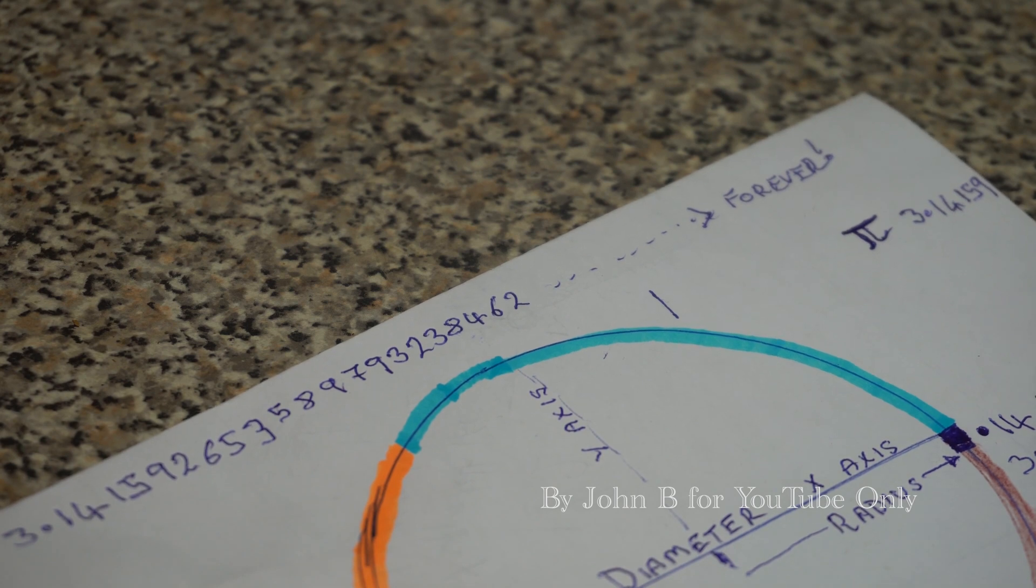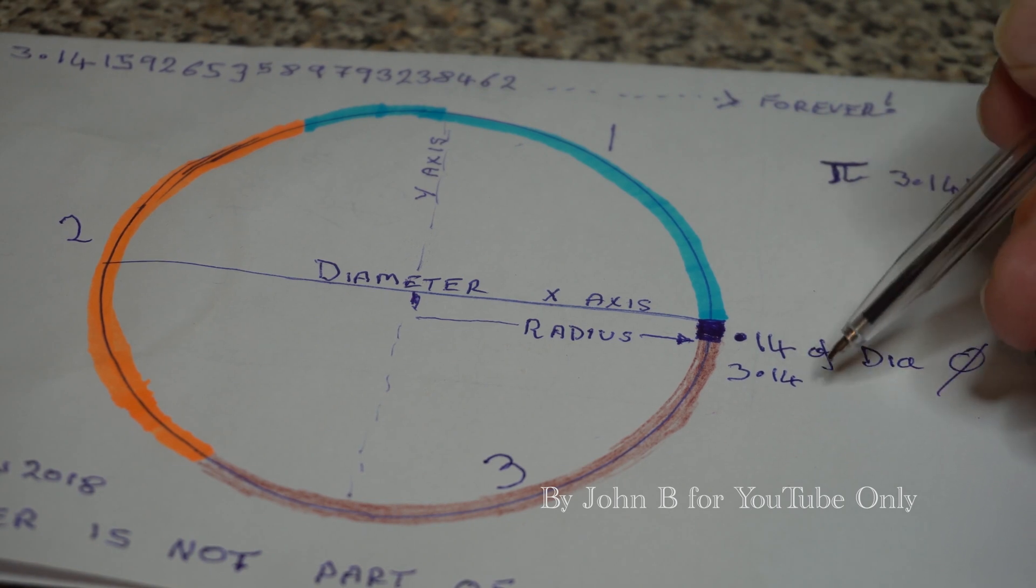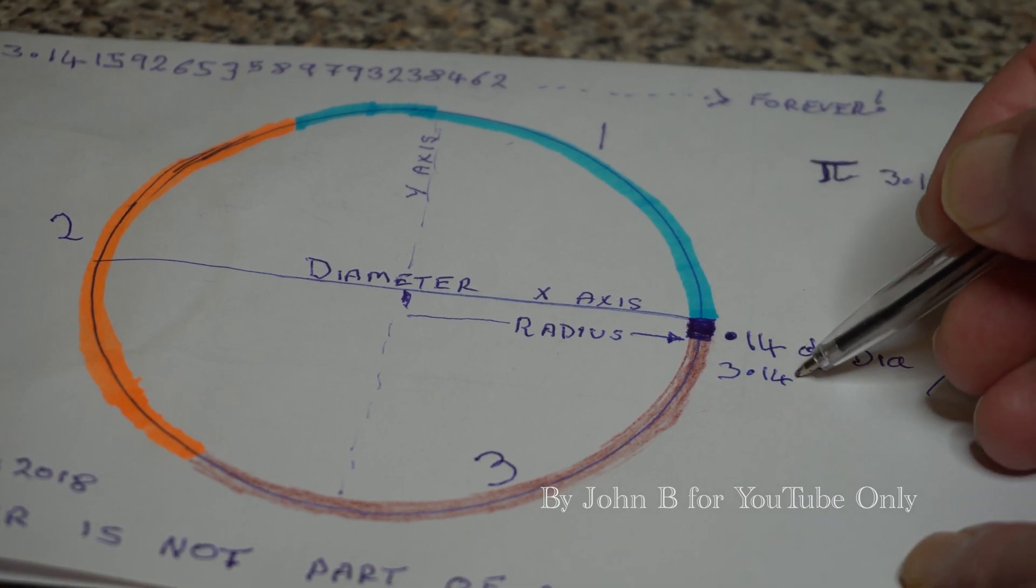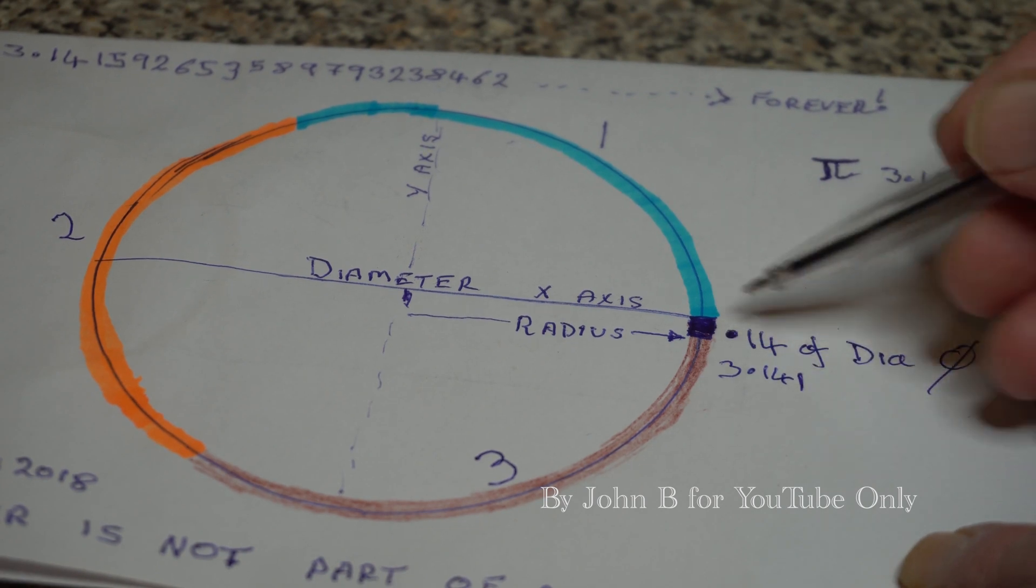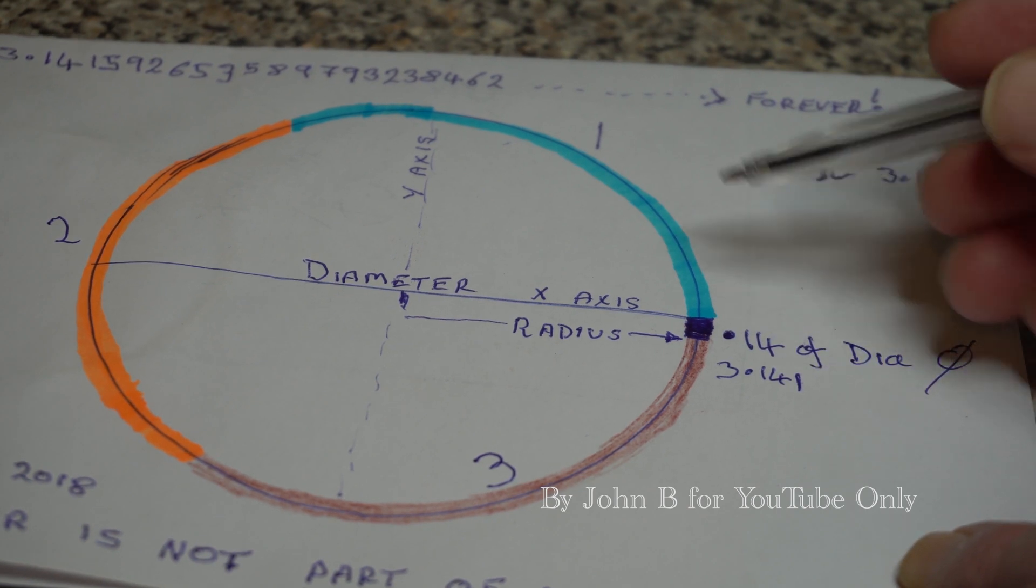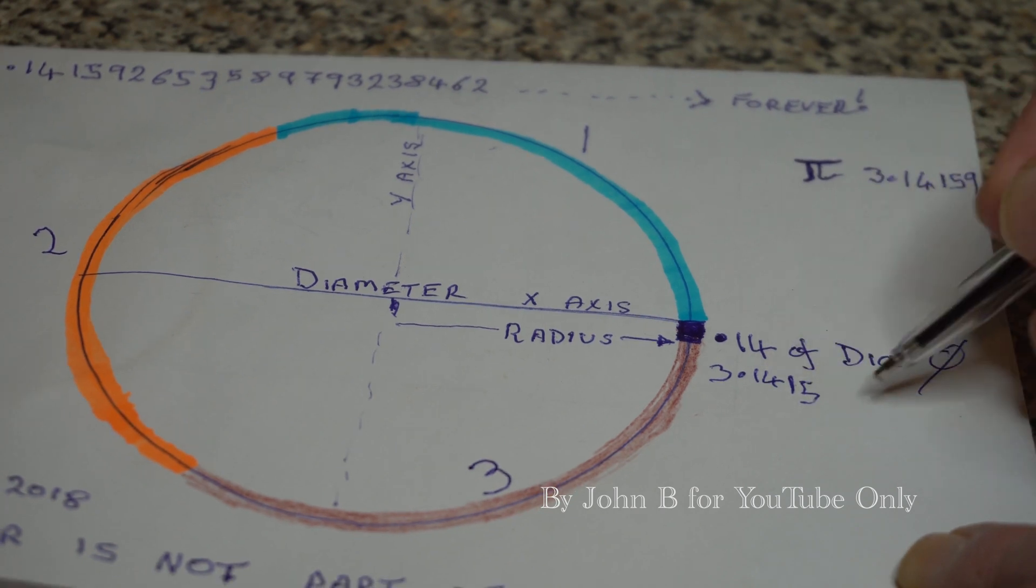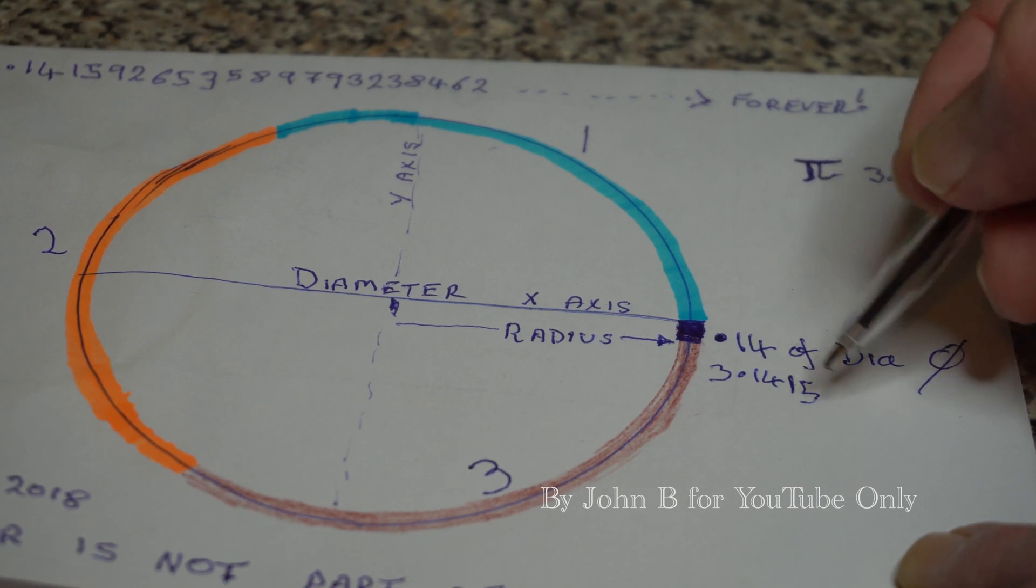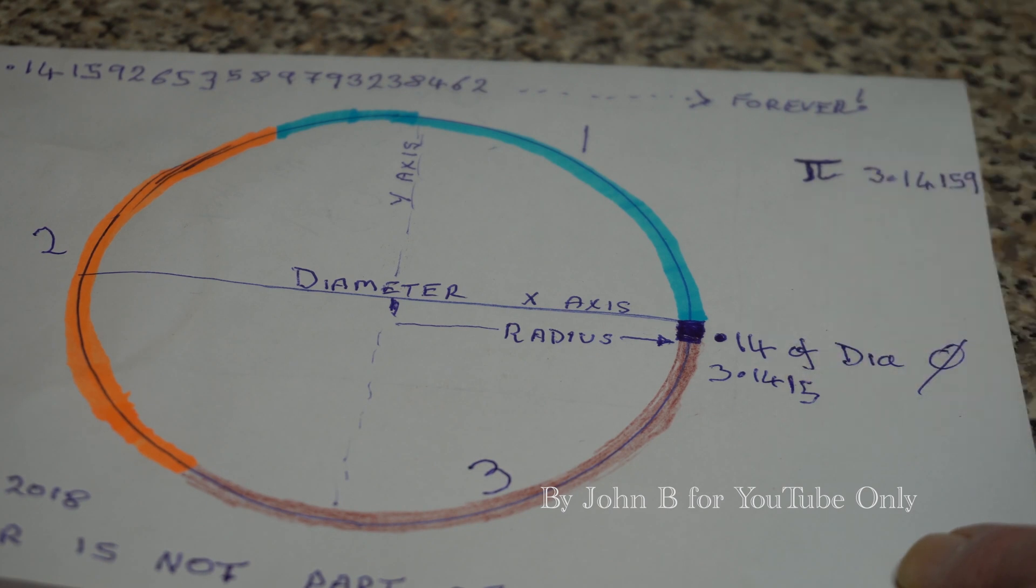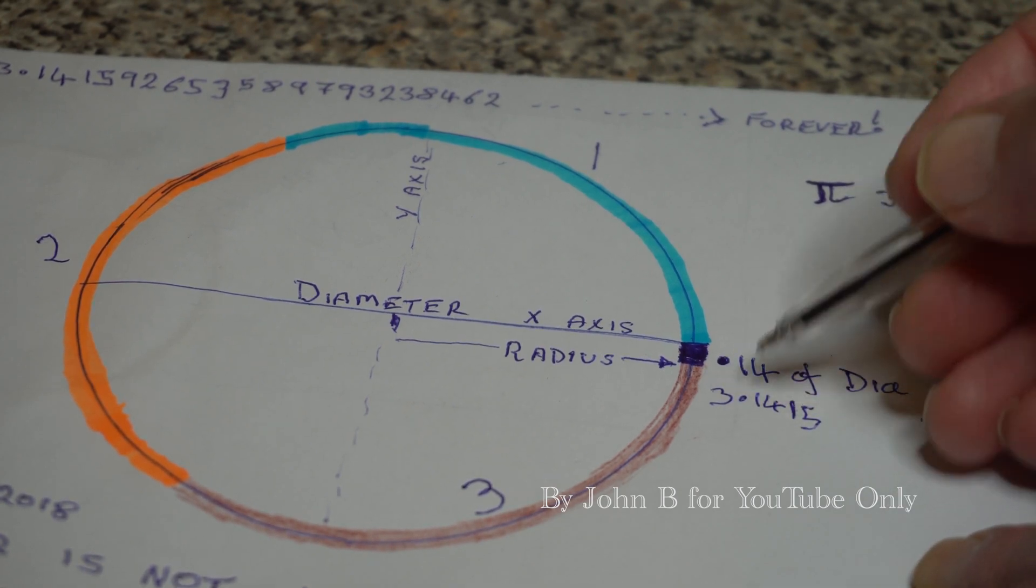So instead of 3.14, if you add another decimal place, 3.141, it's still not big enough, it still doesn't fill in that gap. If you made this a 2 it's too much, so you put a 5 in there, it's still not enough. Then you go 9, 2, 6, 5, 3, 5, 8 and so on and so forth, and it never ends. You're always going to have a little gap.